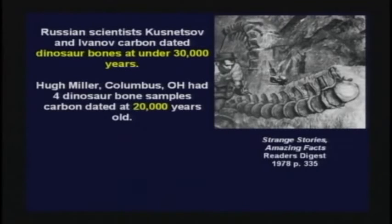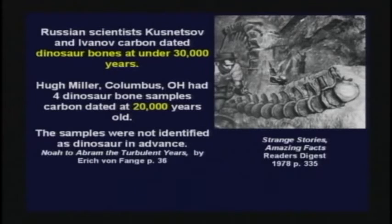He said, by the way, these are dinosaur bones. They said, oh, well then they're not 20,000 — we've got to test them again. Why can't they be 20,000? They said, we know dinosaurs lived 70 million years ago, so if you had told us that, we never would have carbon dated them.